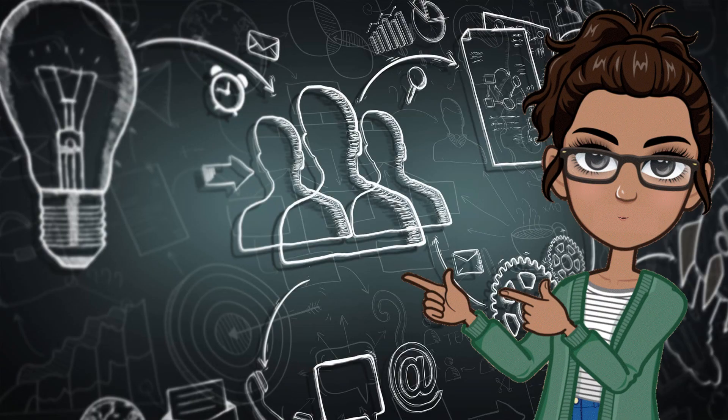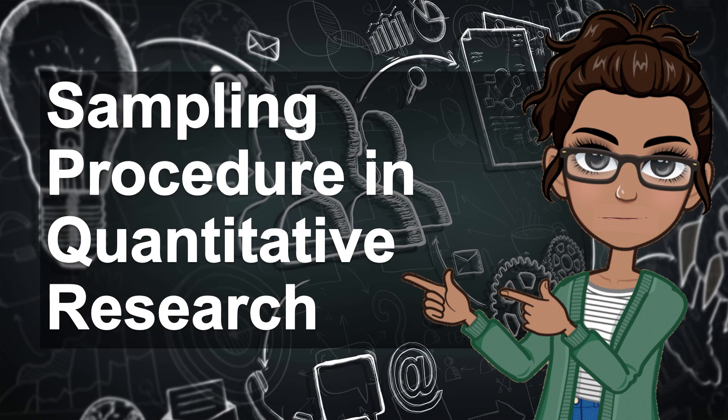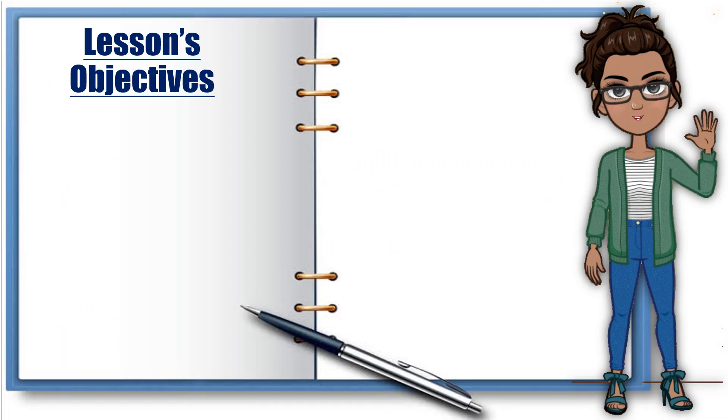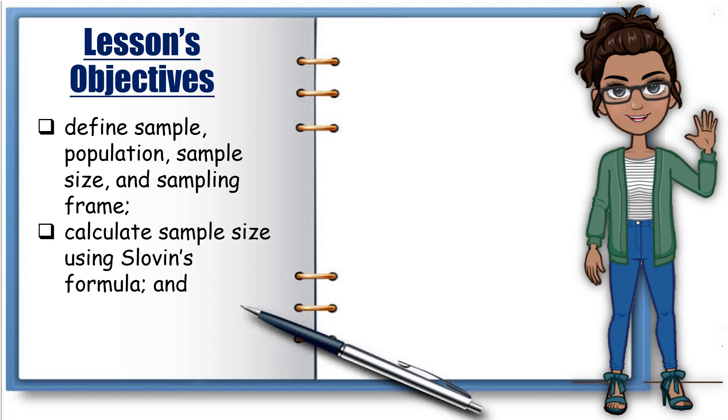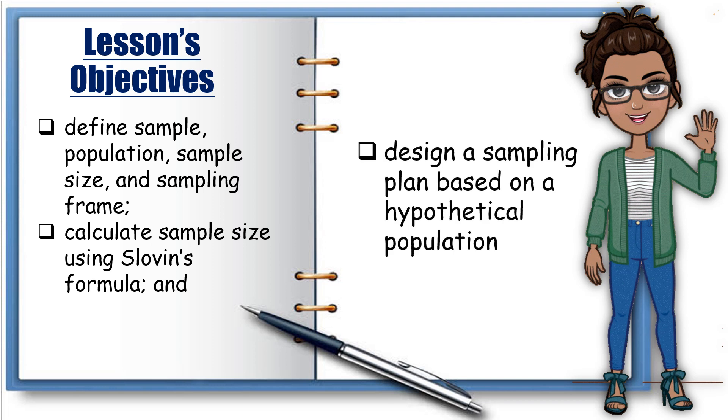Today, we will learn the sampling procedure in quantitative research. The objectives of this lesson are to define sample, population, sample size, and sampling frame, calculate sample size using Sloven's formula, and design a sampling plan based on a hypothetical population.